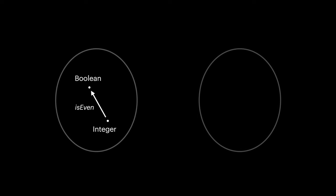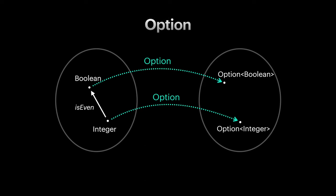An example of a functor in functional programming is option type constructor. Option maps each type to an option of that type. In order for option to be a functor, it should map all functions like is even as well. The function that does this mapping is usually called fmap or simply map.